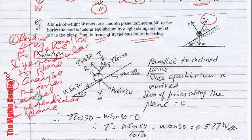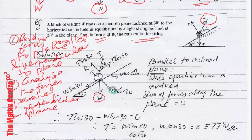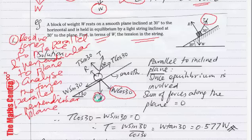That means we will use the information from step number one. Look at the picture I have drawn. We have the block of weight W — you can see W here — and the component of W perpendicular to the plane is W cos theta, so it's W cos 30. And the component of W parallel to the plane is W sin 30.